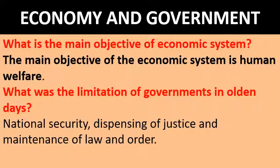What is the main objective of the economic system? The main objective of the economic system is human welfare. What was the limitation of governments in olden days? National security, dispensing of justice, and maintenance of law and order were the limitations of governments in olden days.